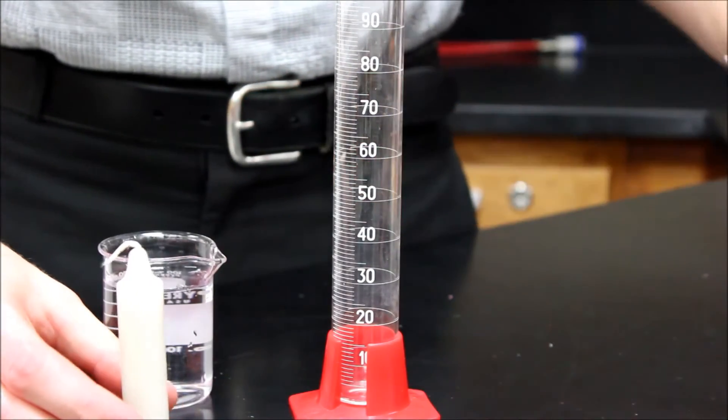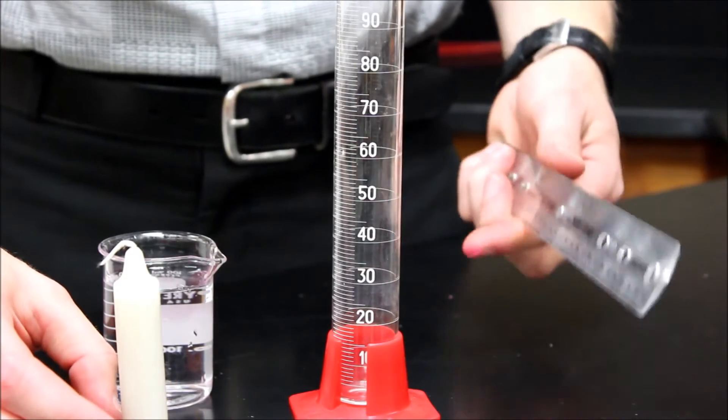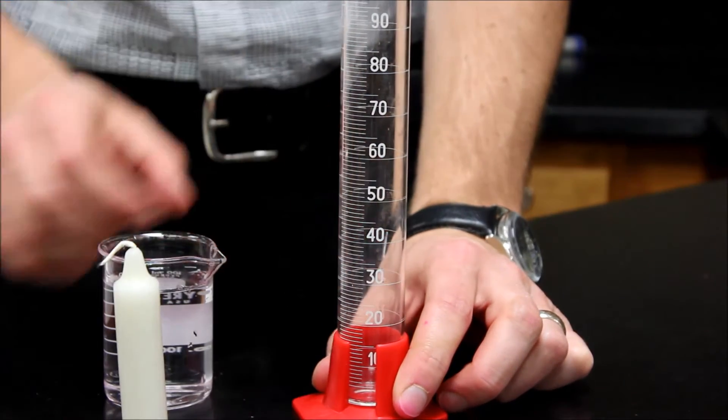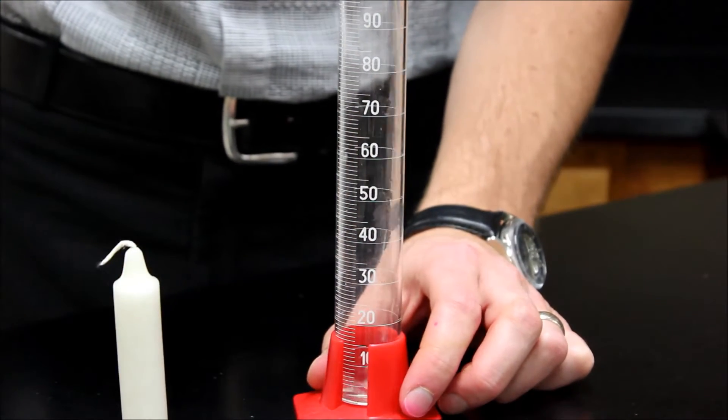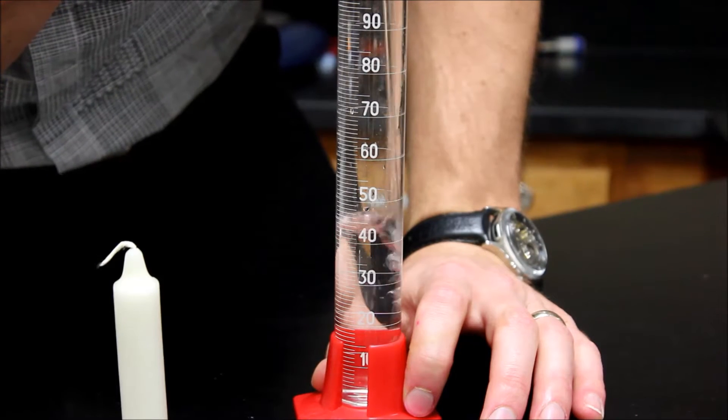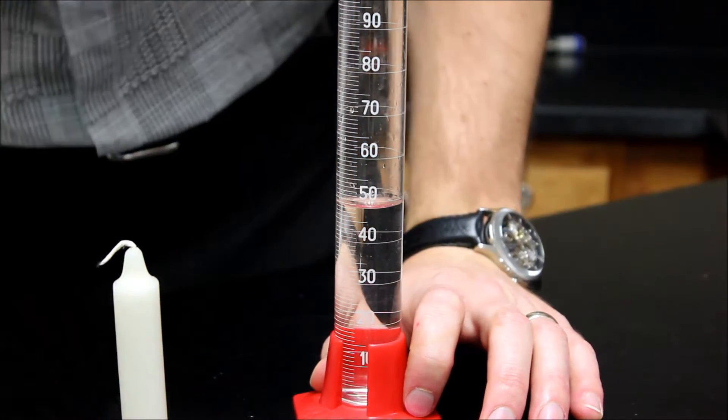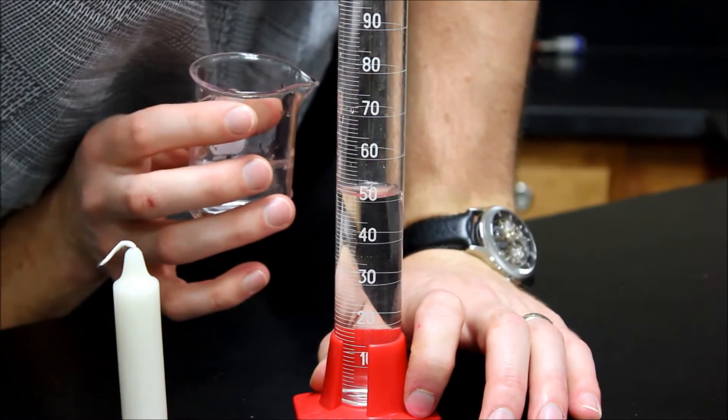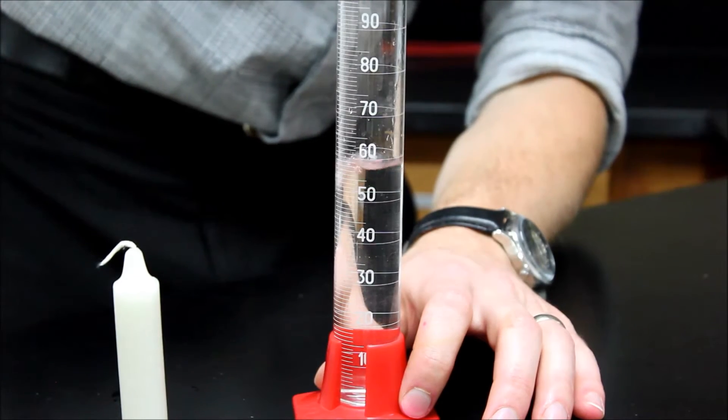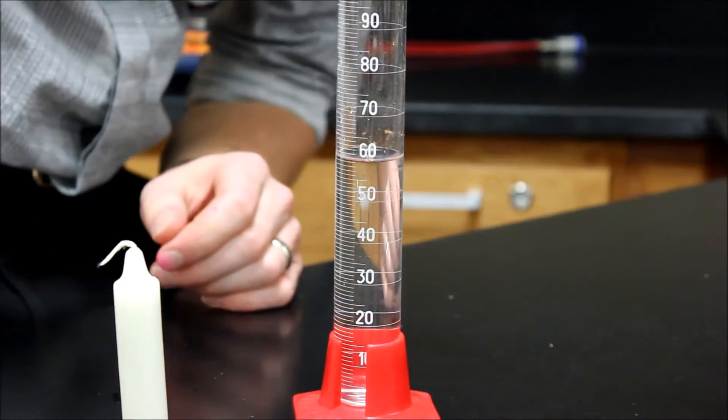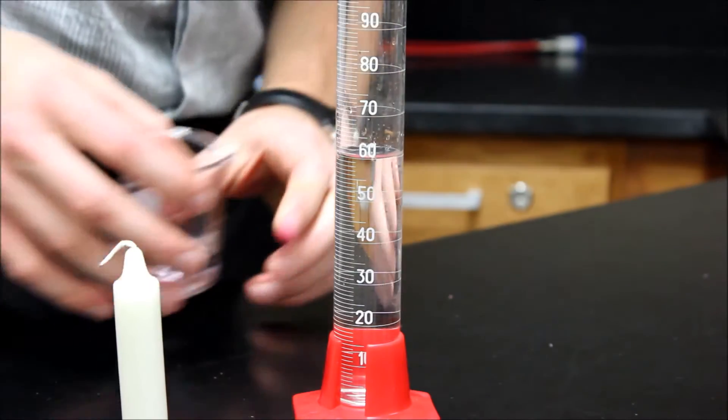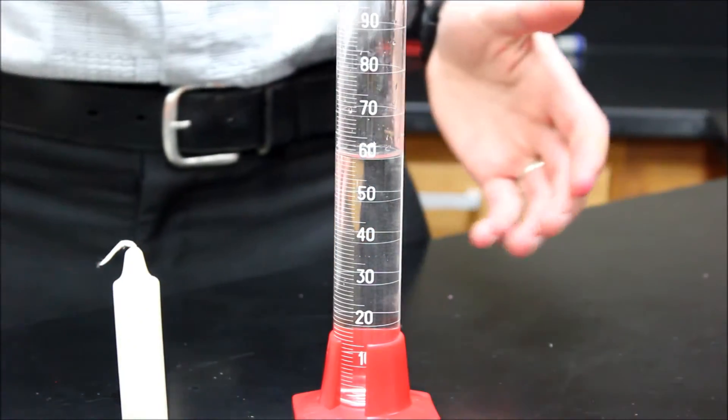And since it's an odd shape, I can't just use my ruler and find the length times width times height. I have to use this method of a graduated cylinder. So first thing I'm going to do is I'm going to add a certain amount of water. So let's go up to about 50, or maybe 60 since I missed it already.